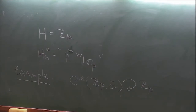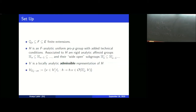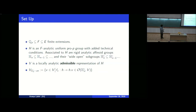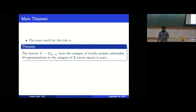To each locally analytic representation of H, we can associate the rigid analytic vectors, denoted V^{H_{n,0}-an}, which are the vectors inside V where the action of H_{n,0} is rigid analytic. With this setup, the initial question of Schneider and Stuhler can be formulated as the main theorem of this talk: the functor which takes a locally analytic admissible representation V to its H_{n,0} rigid analytic vectors is exact.